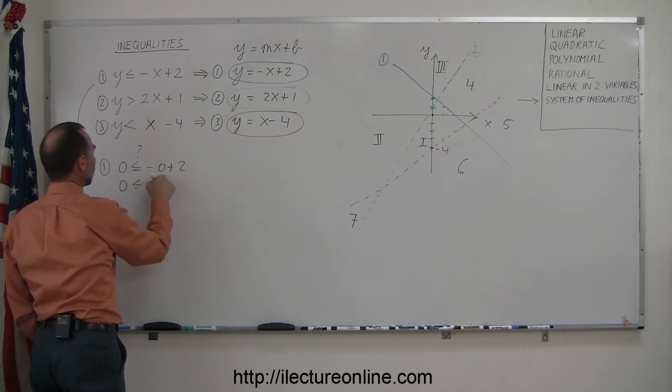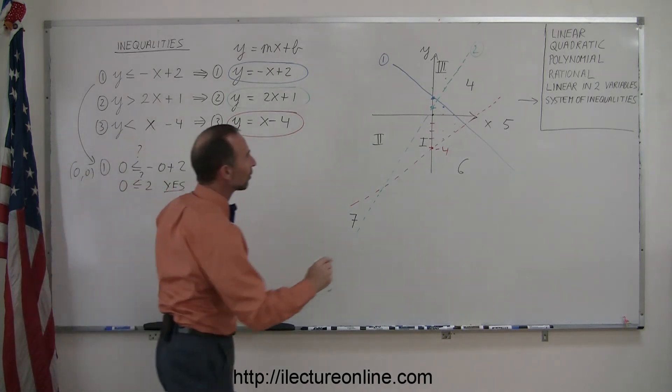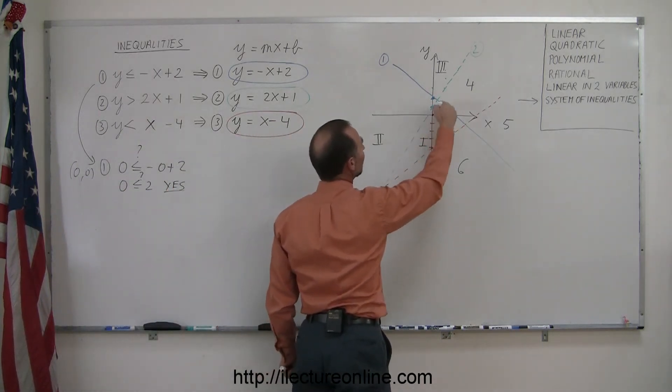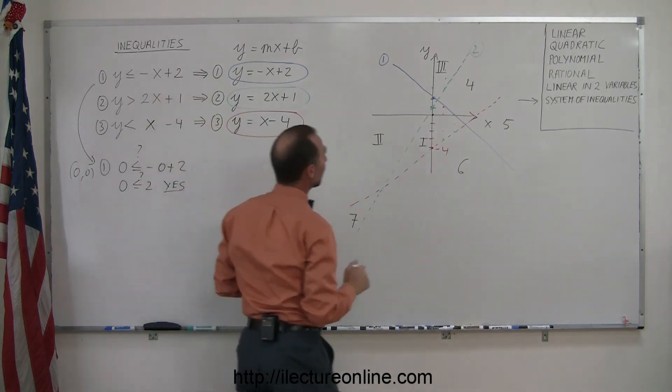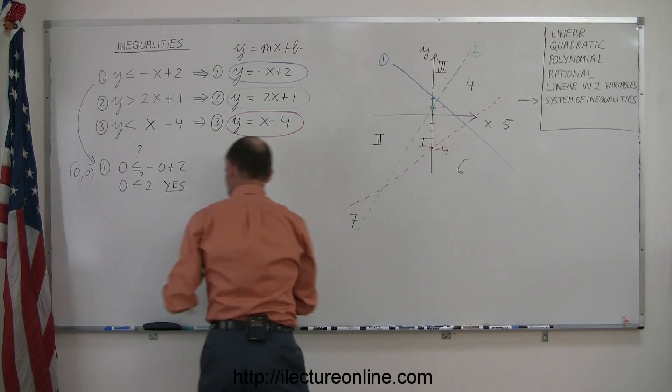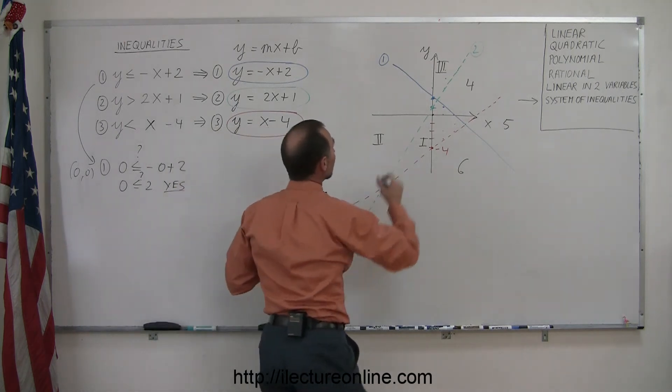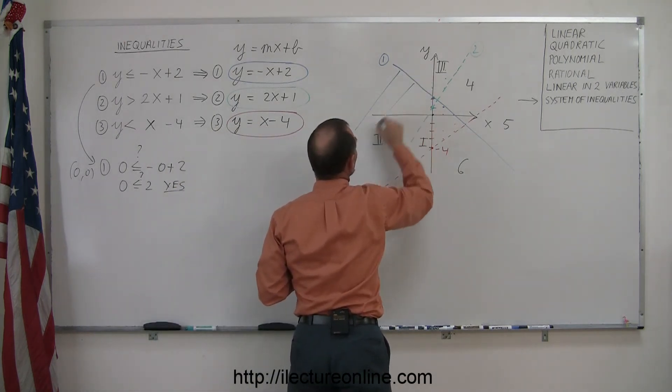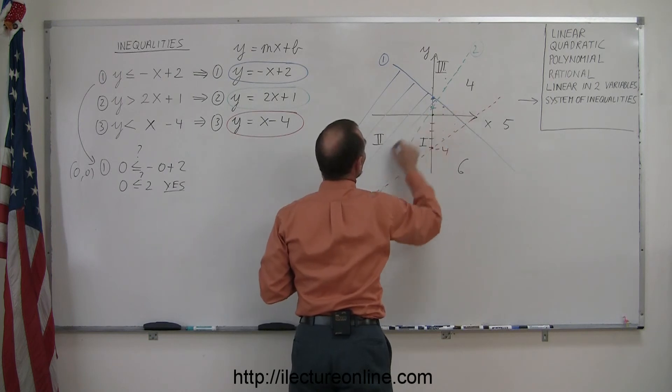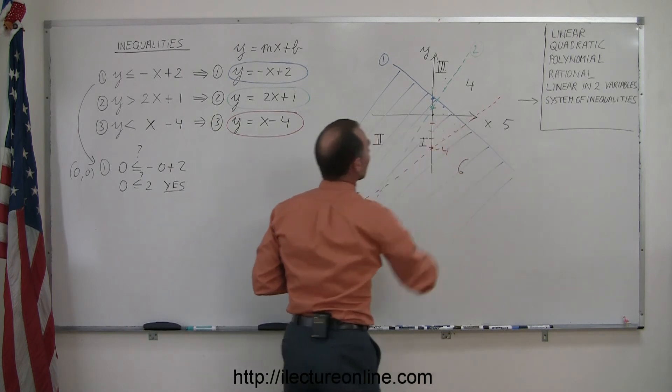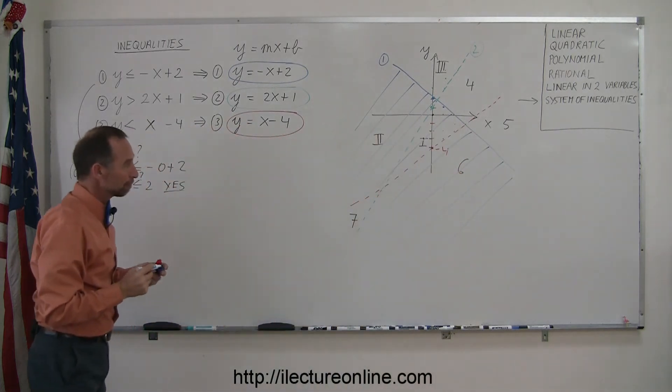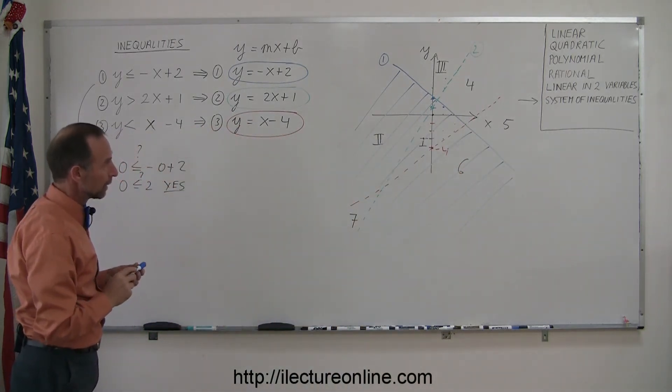0 is less than or equal to 0 plus 2 or 2, question mark. And the answer is yes, 0 is indeed less than 2, which means that (0, 0) lies in the solution, the region that satisfies the first inequality. So let's go ahead and draw lines indicating that this is the correct region that satisfies the first inequality.